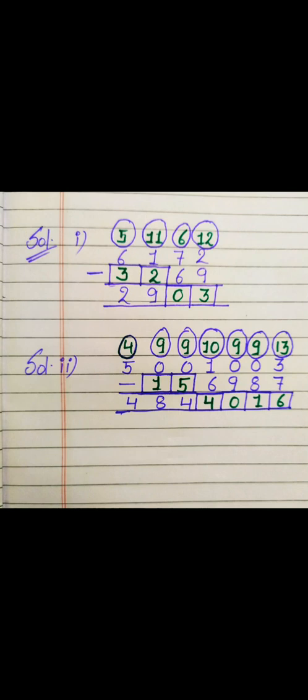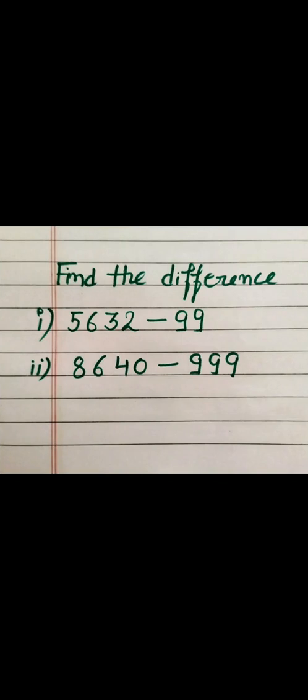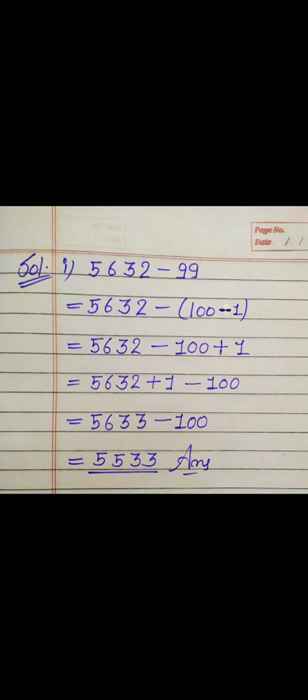Now let's solve the next question where we have to find the difference using a shortcut trick. We know 99 can be split as 100 minus 1. When we open the bracket the minus sign changes the sign. According to BODMAS we solve addition first, so we add 1 to 5,632, getting 5,633, and then subtract 100 to get 5,533.